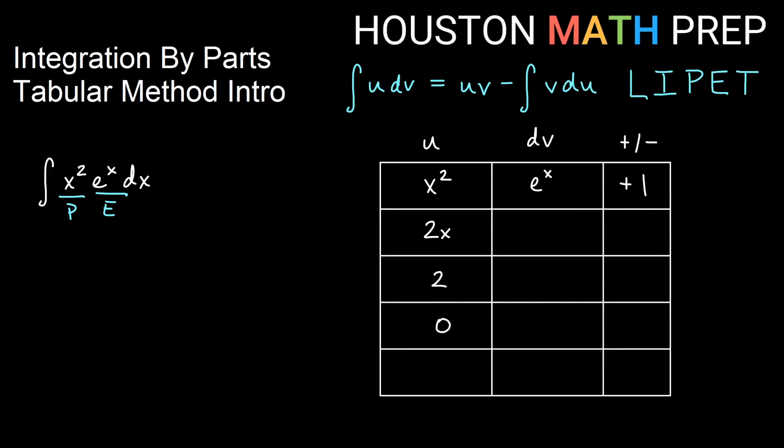The idea is in the table we will use entries diagonally to assign terms in our answer. If I keep going down the column with e to the x in it and I keep taking the antiderivative, I'm just going to keep getting e to the x for this one. So this column is pretty easy. I'm going to actually go one past the 0, and you'll see why.